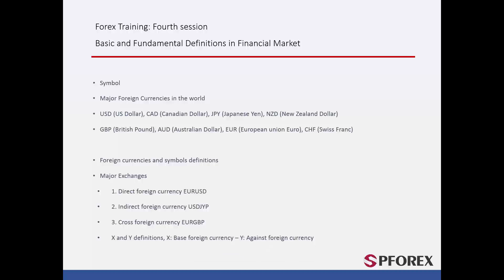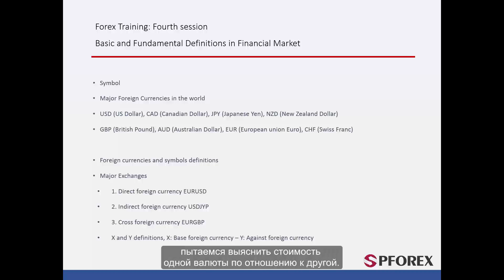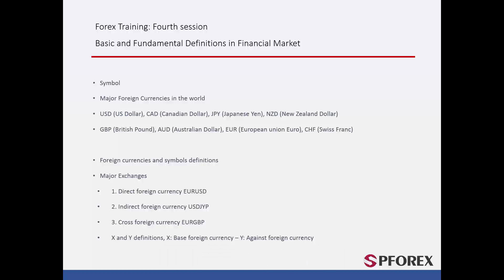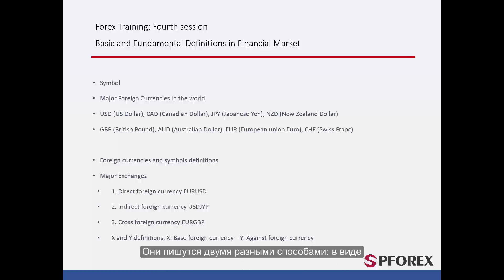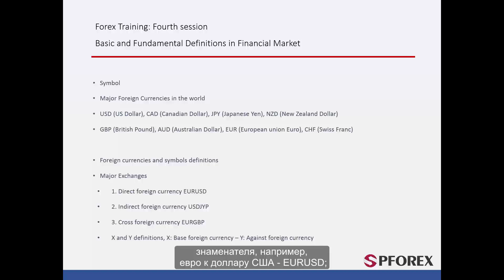In a financial market, when we talk about symbols, we are usually trying to find out the value of one currency against another. There is always a ratio between currencies in financial markets. Currencies based on a dollar of any kind are called major currencies. These are written in two different ways: in the form of the denominator, for example EUR USD, or indirectly, for example USD JPY.